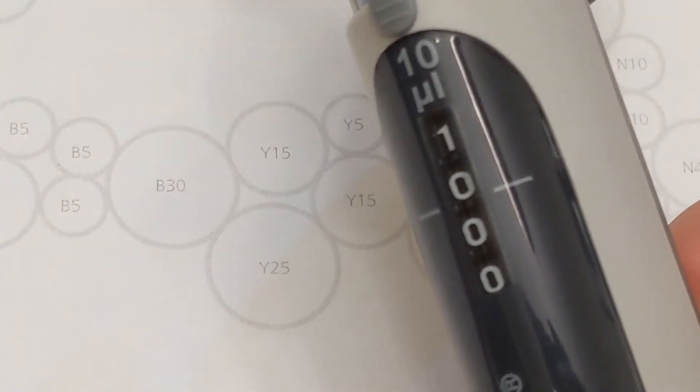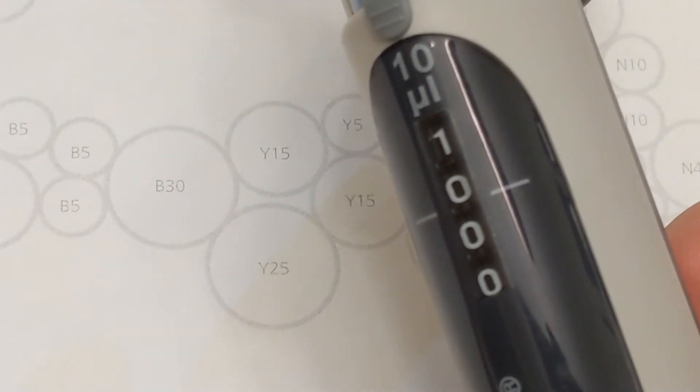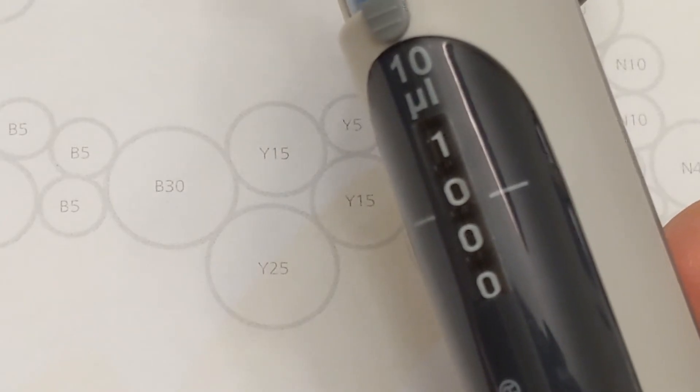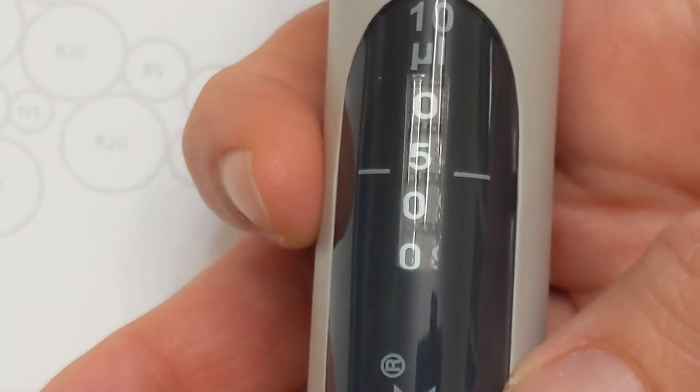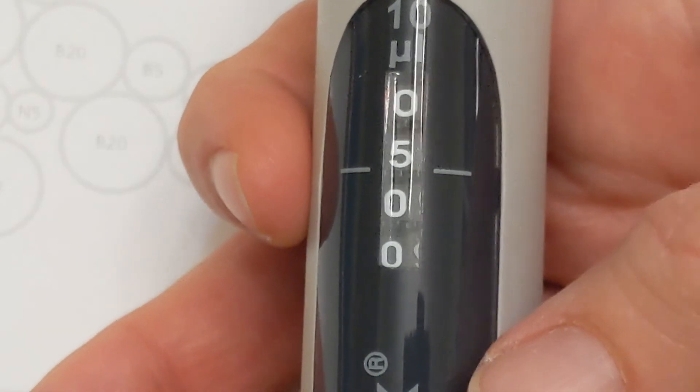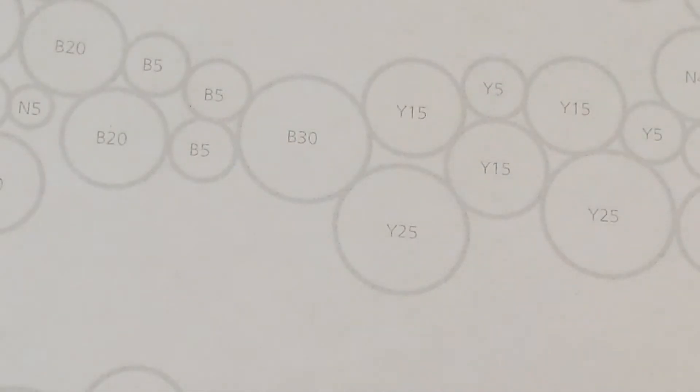So you're going to take your P10 and you have a choice. You can set it to 10 and do a 10 and then do a 5 on top of it, or you can set it to 5 and do three 5s in a row. I am setting my micropipette to 5 and I'm going to go ahead and do three 5s in a row because I prefer that over trying to change the volume. So this is a Y15, which tells me I need to use my yellow dye.